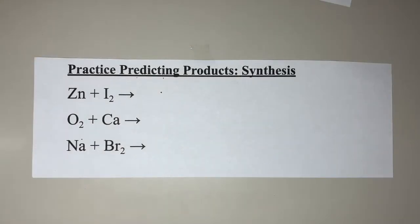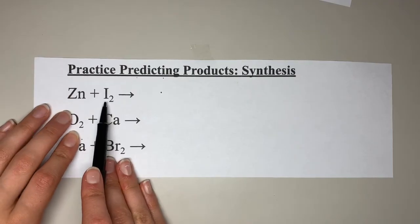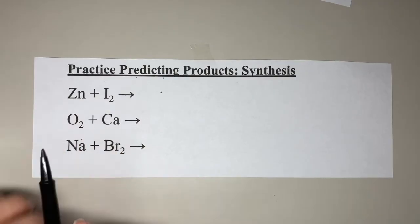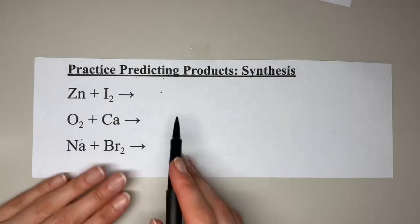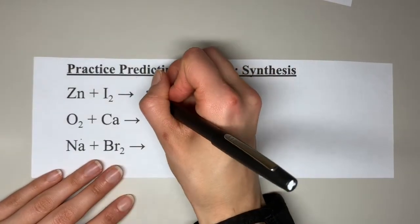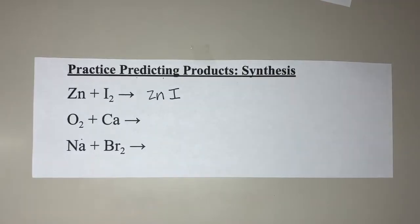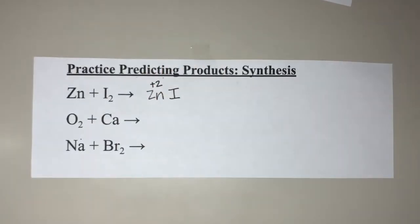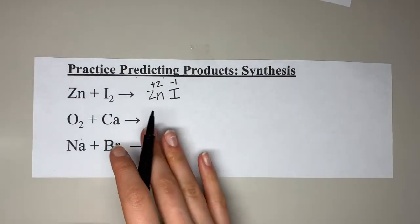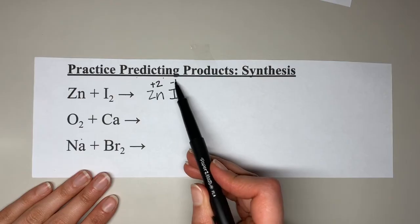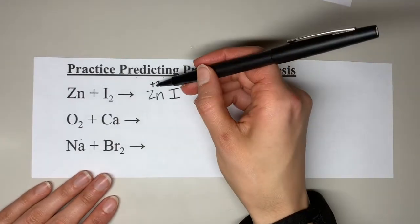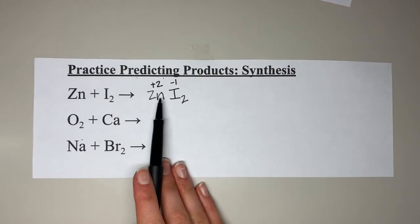Take a second to try these three practice problems — hit pause while completing them, then hit play for the answers. The first one: zinc reacting with iodine. It is a synthesis reaction because it is an element reacting with an element. Our product is a compound consisting of zinc and iodine. Zinc is a +2 charge and iodine is a −1. Crisscross: the one by the iodine comes down by the zinc (we don't write that), and the two by the zinc comes down by the iodine, giving us ZnI2.